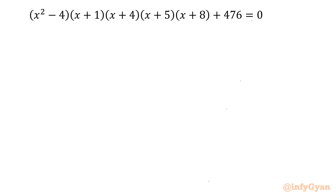Hello everyone, welcome to Infigya. In this very exciting video on hexic equations, we will be solving one Olympiad prep problem, which is (x² - 4x + 1)(x + 4)(x + 5)(x + 8) + 476 = 0. I will use algebra altogether to solve this problem. So let's get started.